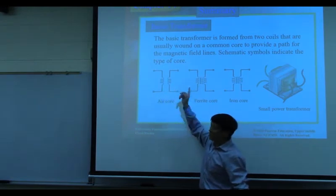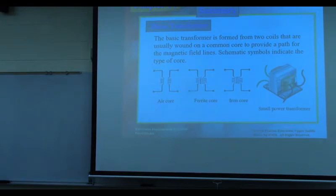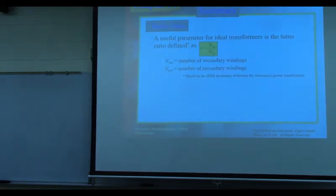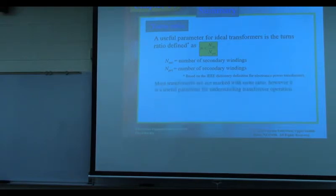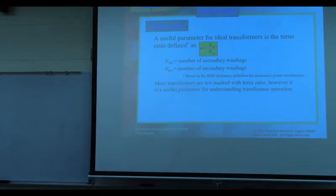The number of turns on the primary coil is Np (primary), and the number of turns on the secondary is Ns. This ratio is called the turn ratio, defined as the secondary number divided by the primary number. Most transformers are not marked with turn ratios, but it is very useful for understanding transformer operation.